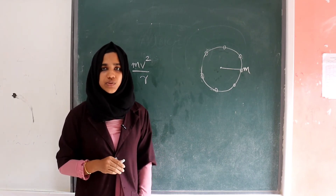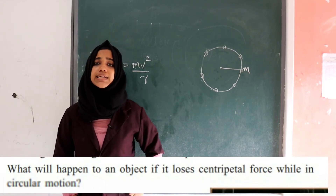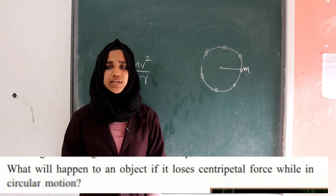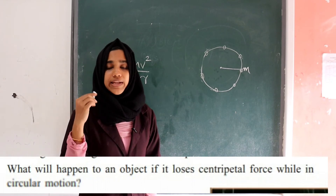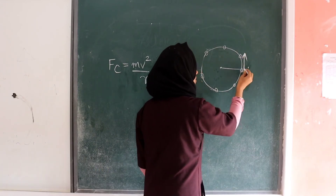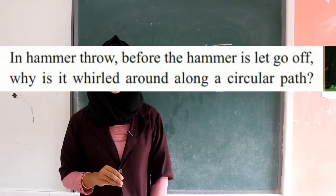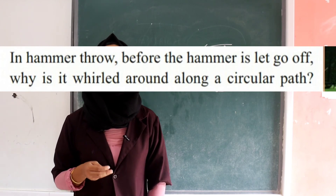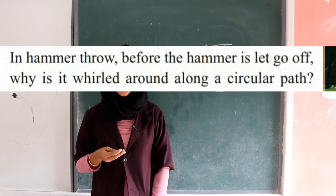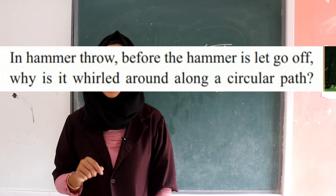An important question: what happens if an object loses centripetal force while in circular motion? It will not fall straight down — it will be thrown off along the tangent. This is seen in hammer throw: before the hammer is released, it is whirled in a circular path to get the required force so the object travels a greater distance.